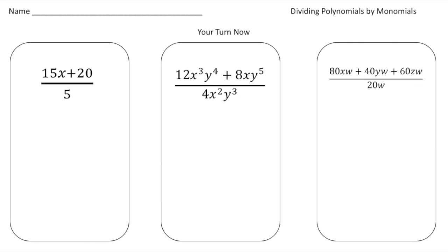Welcome back! Let's see how you did. The first problem was 15x plus 20 divided by 5 — a binomial divided by a monomial. 15x divided by 5 gives 3x, and 20 divided by 5 is 4, so the answer is 3x plus 4.